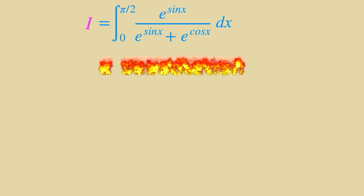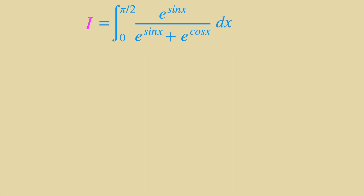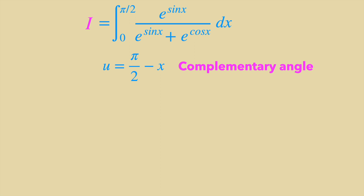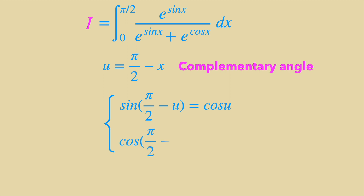Let's go ahead and let u equal π/2 minus x, which means u is just the complementary angle of x. We know that sine of a complementary angle is just going to be cosine, and similarly cosine of a complementary angle is going to be sine. Keep that in mind — that's what we will use later.